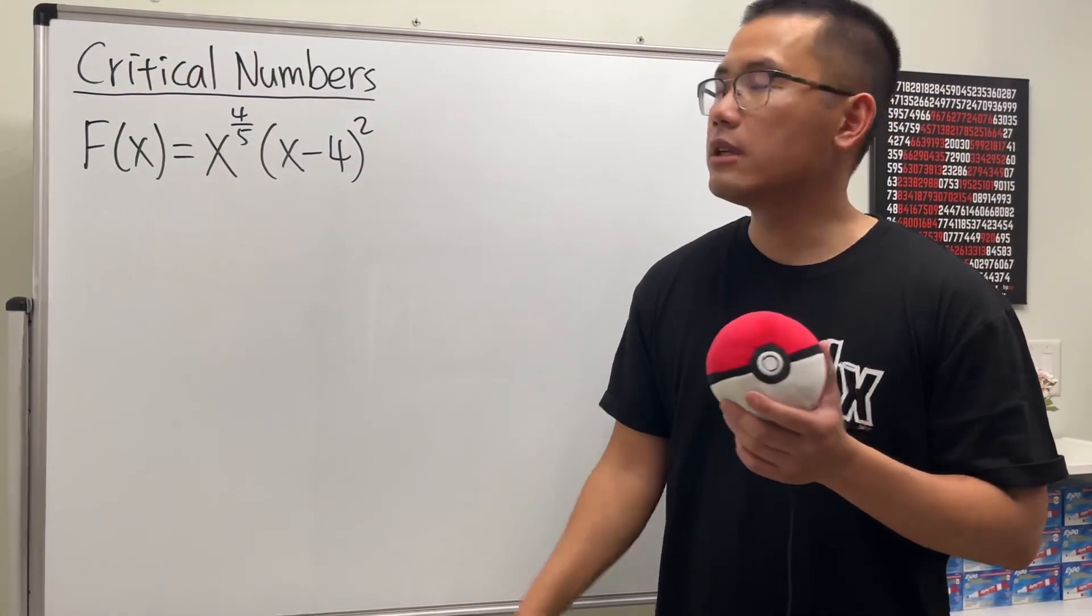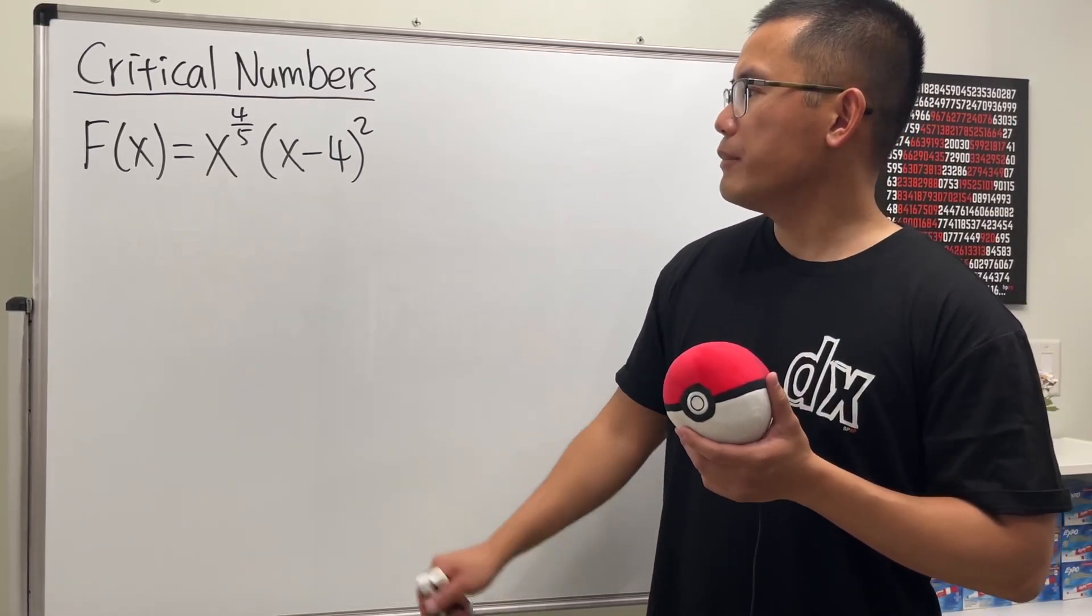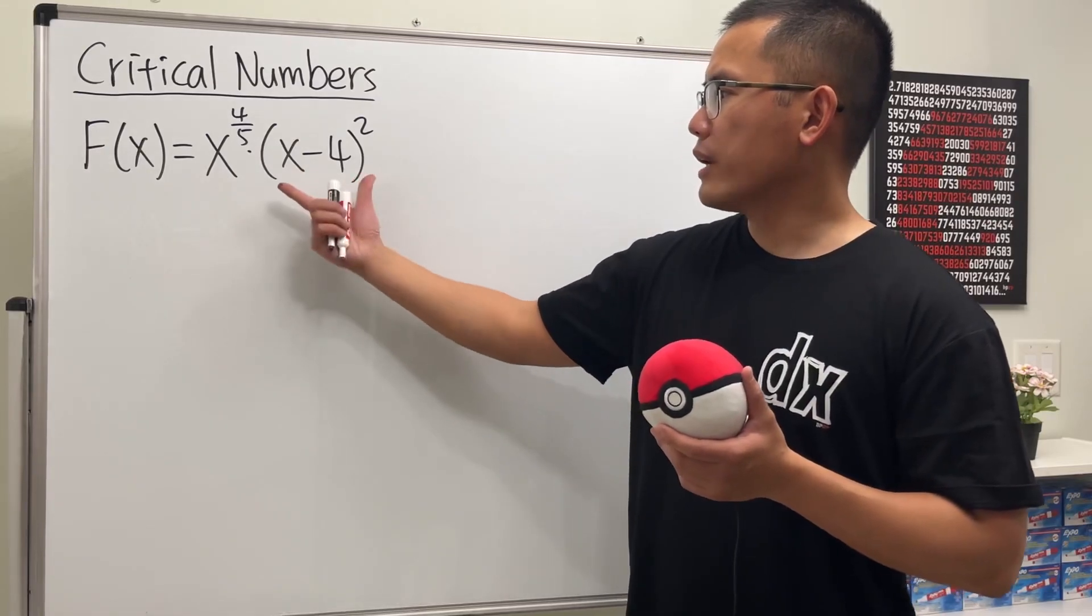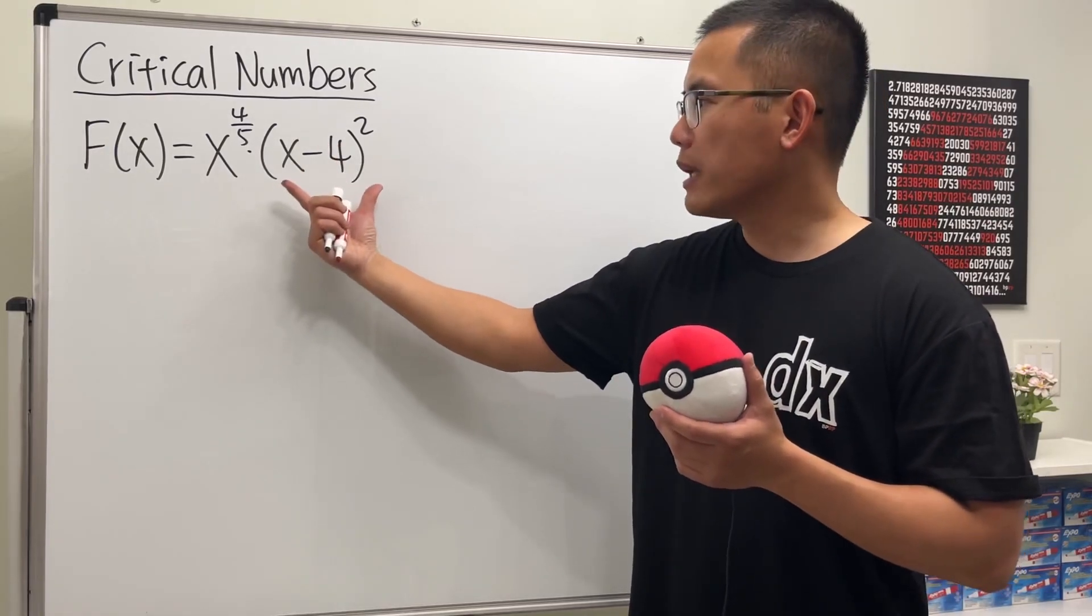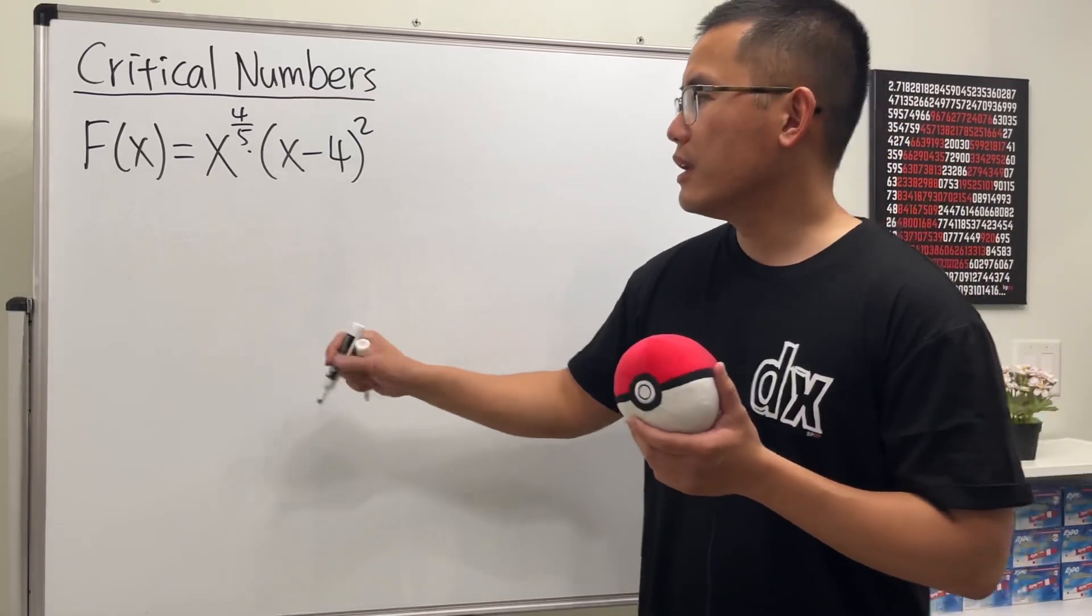Let's see how we can find the critical numbers of this function. Let's do the derivative first. I'm going to use the product rule, even though it's okay if you do algebra first, multiply this out and distribute the x^(4/5), and then use the power rule.